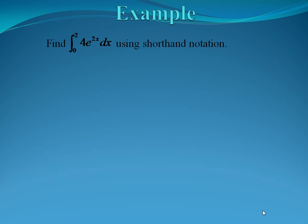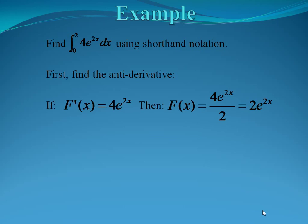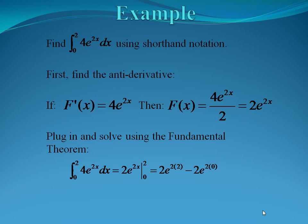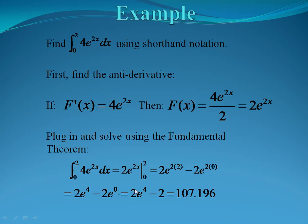Let's do another example. Suppose we want to find the integral from 0 to 2 of 4e to the 2x dx using shorthand notation. First, we need to find the antiderivative. If our original function is 4e to the 2x, then our antiderivative is 4e to the 2x over 2, which simplifies to 2e to the 2x. Plugging into the fundamental theorem with shorthand notation, we evaluate 2e to the 2x from 0 to 2: we have 2e to the 2 times 2, minus 2e to the 2 times 0, which simplifies to 2e to the 4th minus 2e to the 0, giving a final answer of 107.196.